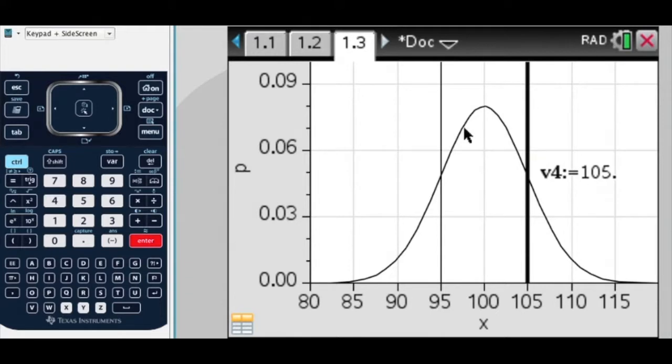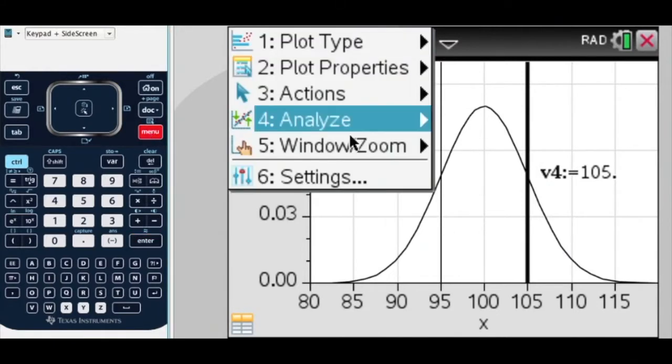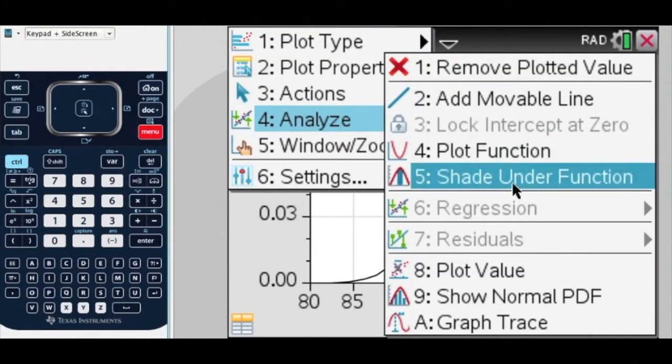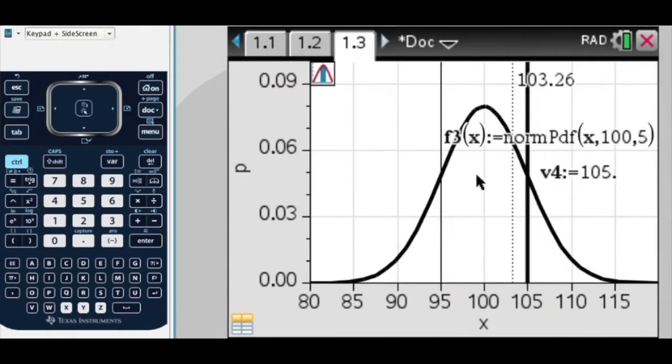Now, I want to shade the area and find the area underneath the normal curve between these two points. So, I press menu, analyze, shade under function. Between, there, and there. And there it is, 0.68, which is what we'd expect.